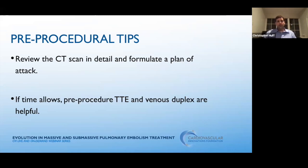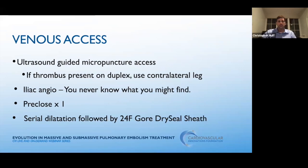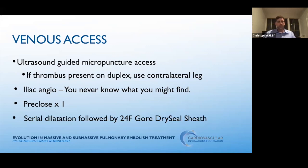An upfront venous duplex is helpful — it helps you decide which groin to access. If you see right femoral vein or common femoral vein clot, you're probably not going to access that side. It also helps determine whether to leave behind a filter. For venous access, we should always use ultrasound-guided micropuncture access. If there wasn't an ultrasound before the procedure, this is your opportunity to check for clot in that groin. The worst thing is inadvertent arterial access in a sick PE patient. I always do an iliac angiogram through my sheath before starting — you can find significant clot, external compression, or an occluded iliac vein.